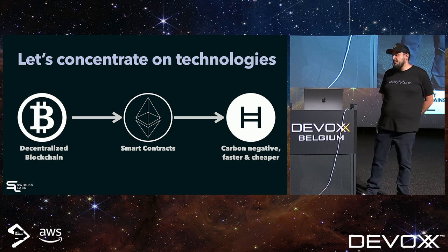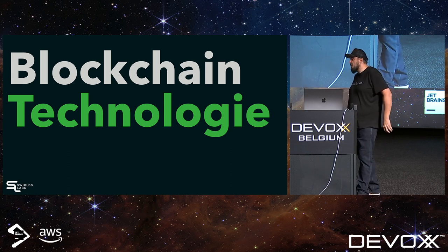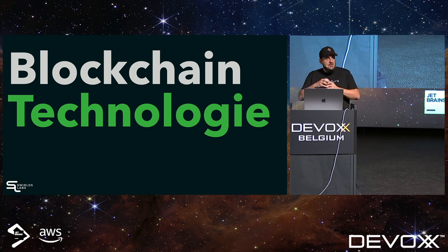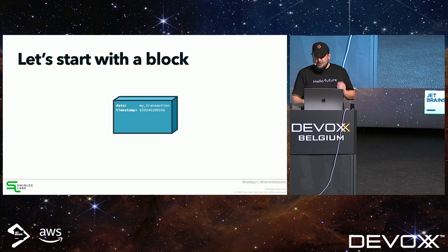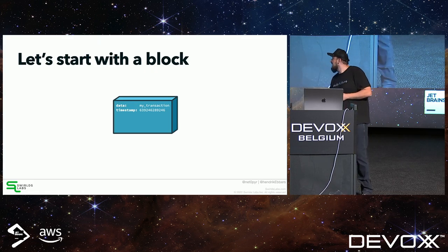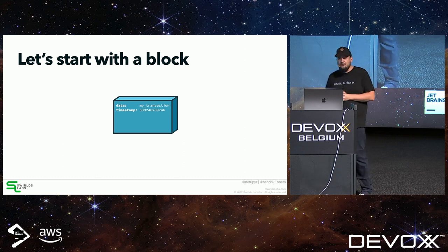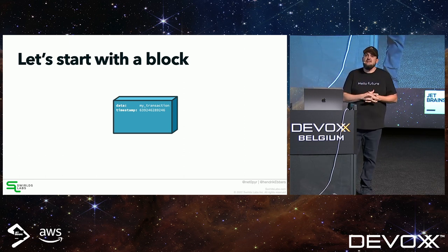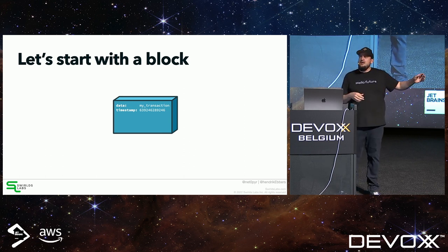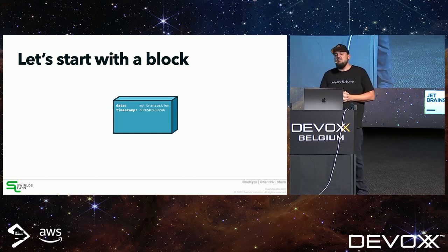Setting aside coins, let's focus on the technologies themselves. The first core concept is blockchain — the foundation of Bitcoin. So what is a blockchain? Starting with the 'block': a block contains some data, typically transactions. For example: 'Person A sent two coins to Person B.' That's a transaction you can store in a blockchain.